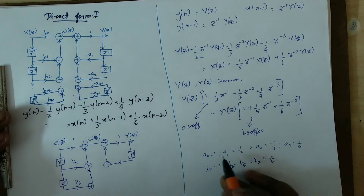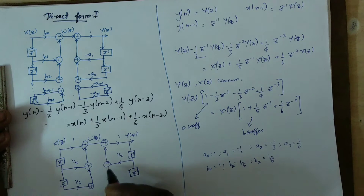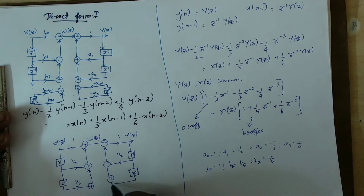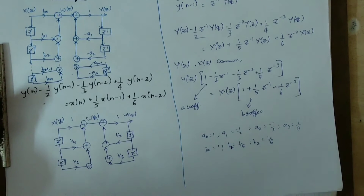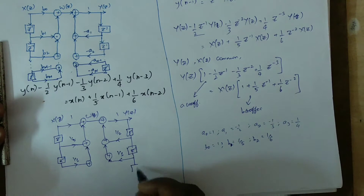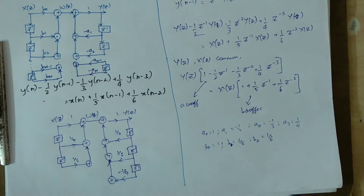On the feedback side: minus of a1, so minus of (-1/2) is 1/2 — add the delay element. Here is the next delay element, add. This is minus of (-a1) plus 1/3 — add the delay element. So this is the delay element, add the delay element, fill it out.